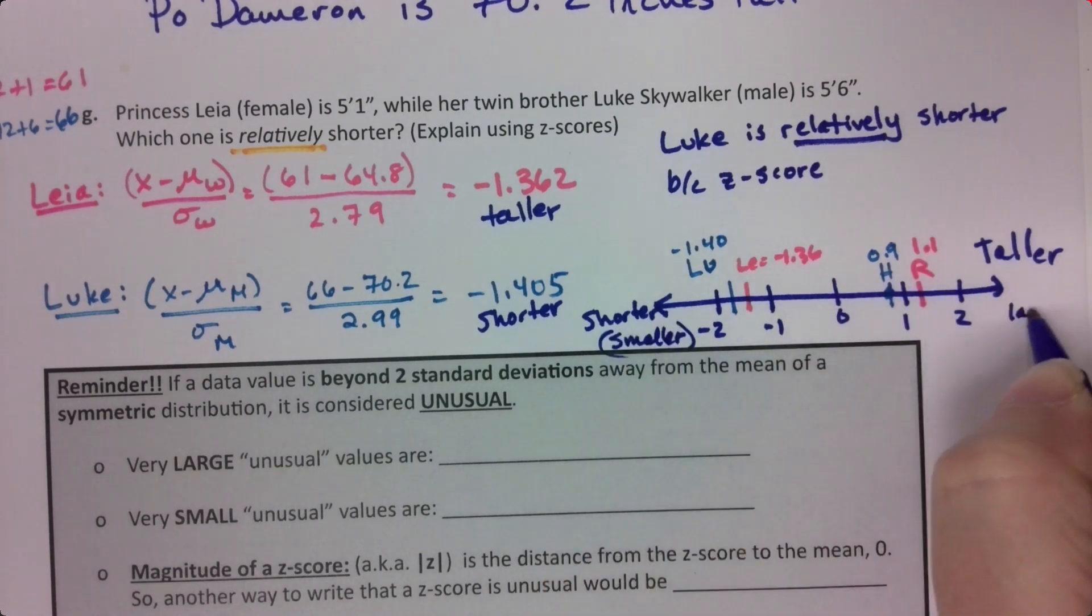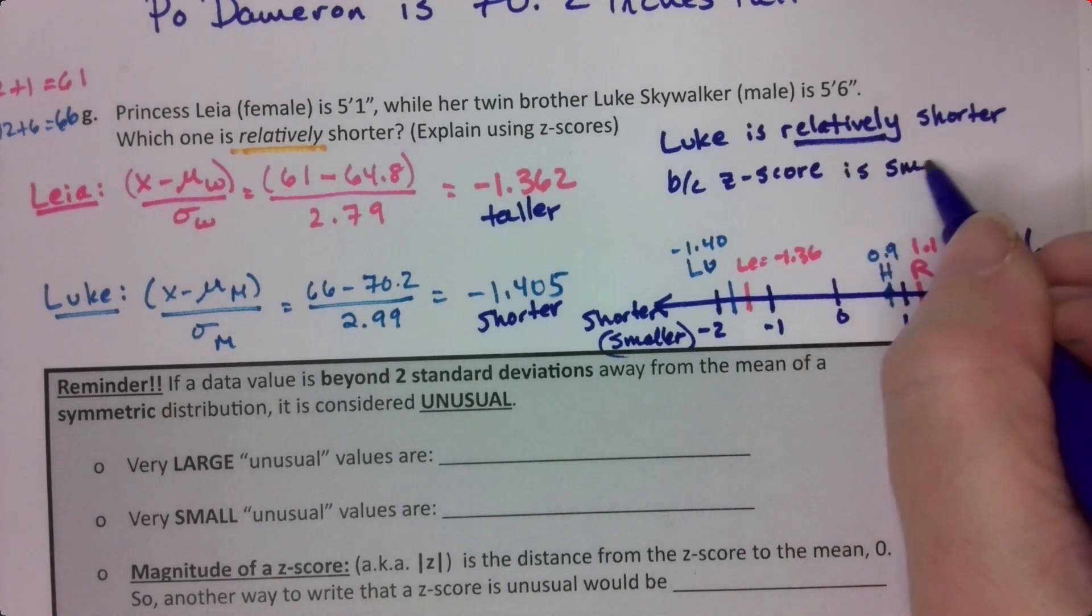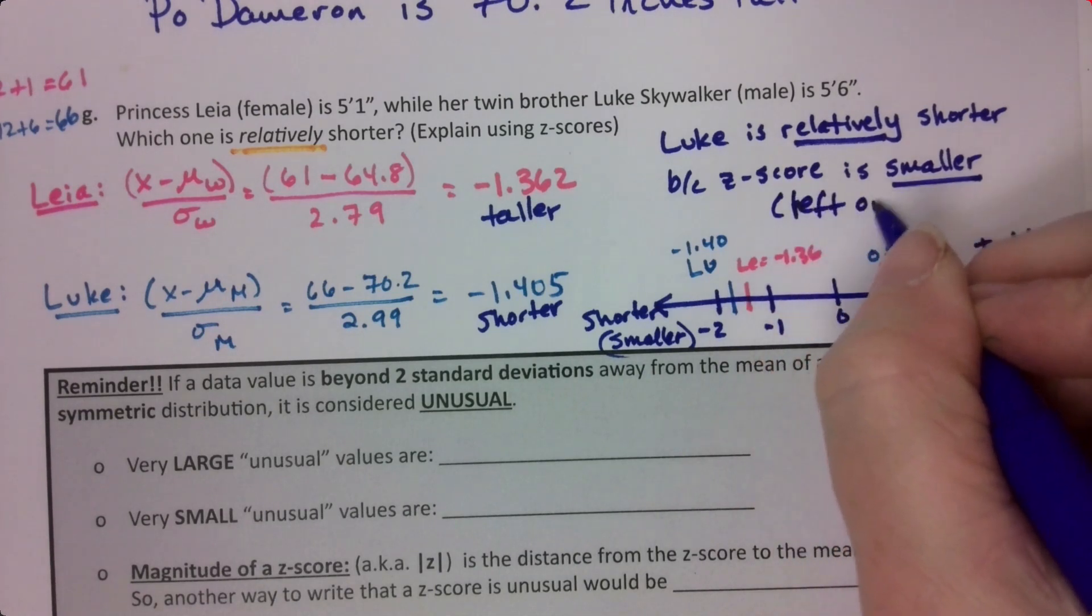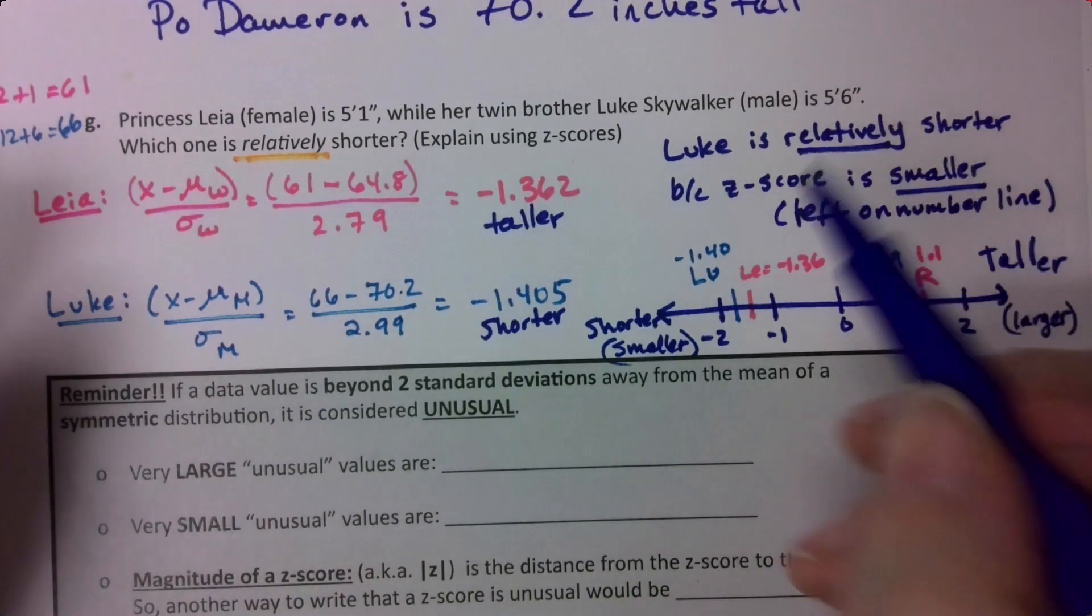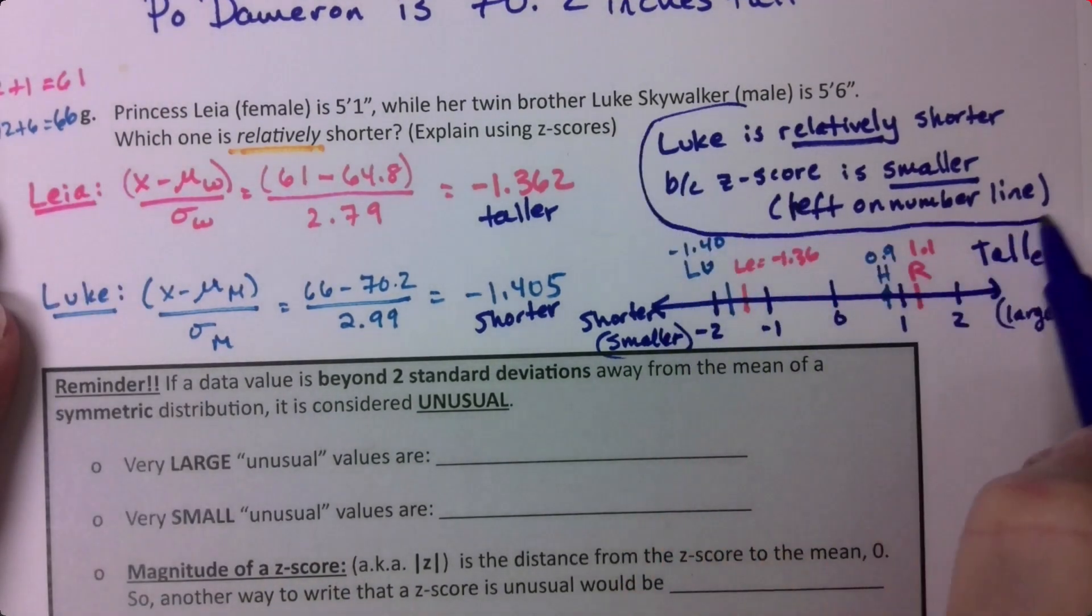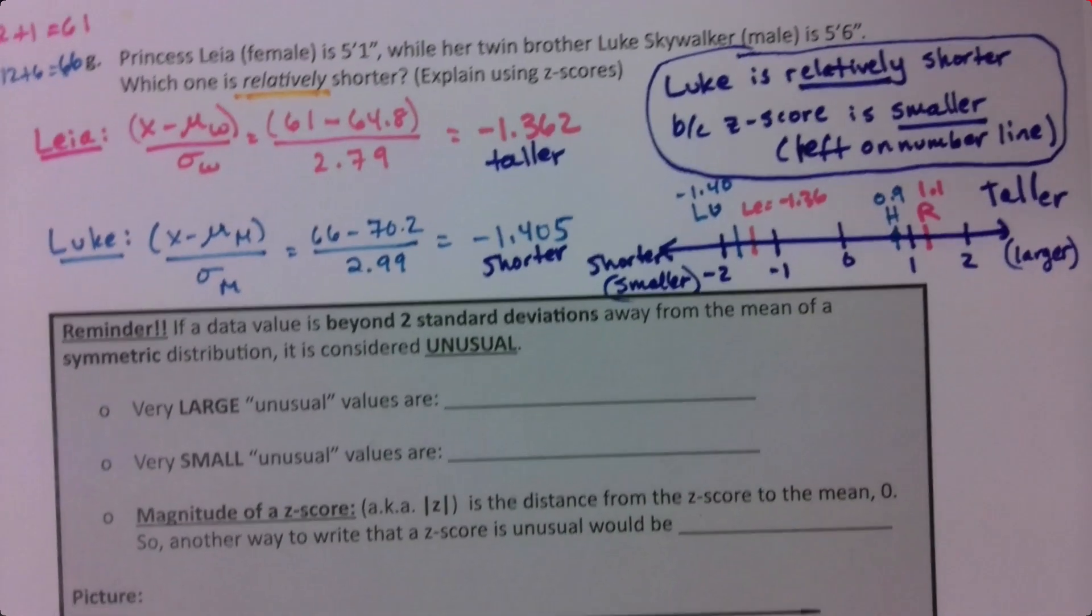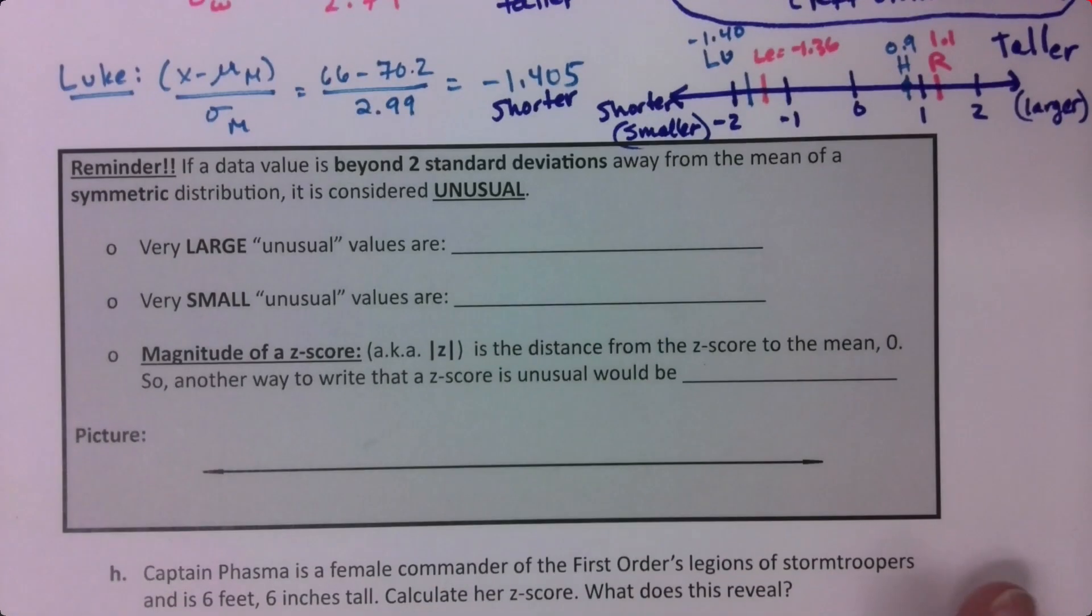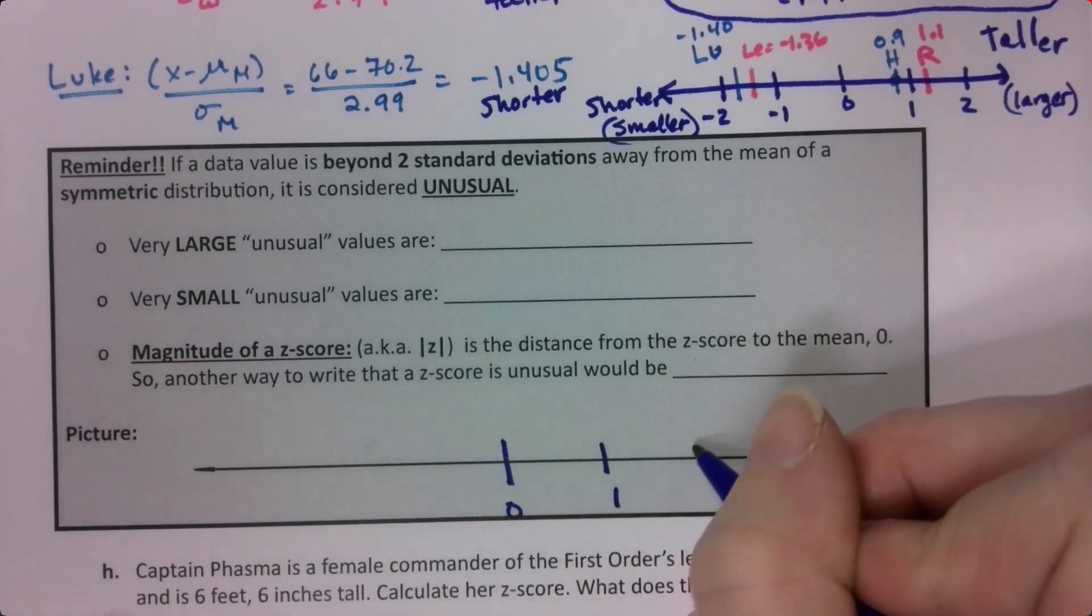Larger z-scores are over here. His z-score is smaller. And the way to think of that is to the left on a number line. That's what smaller means. So we just learned some valuable lessons. We want to think about z-scores as being on a number line.